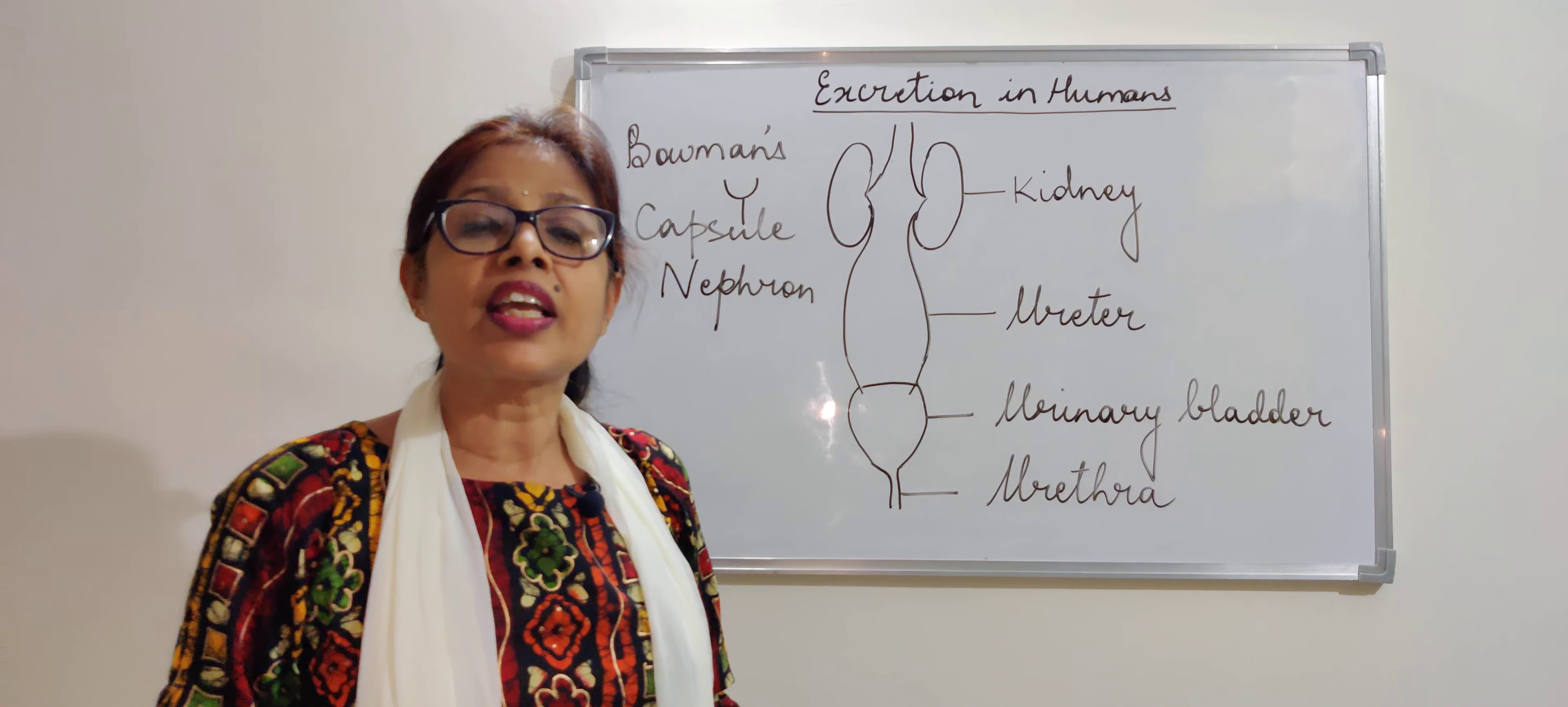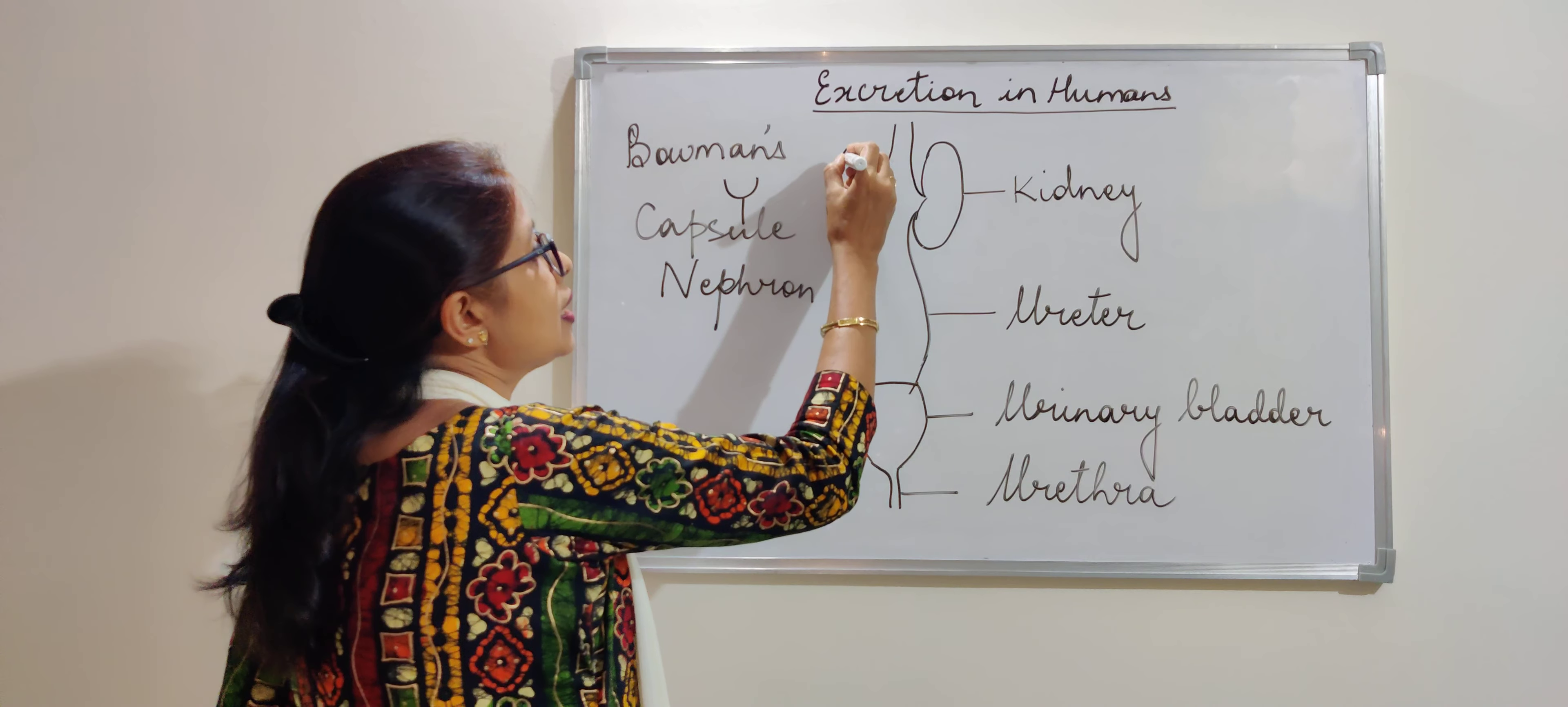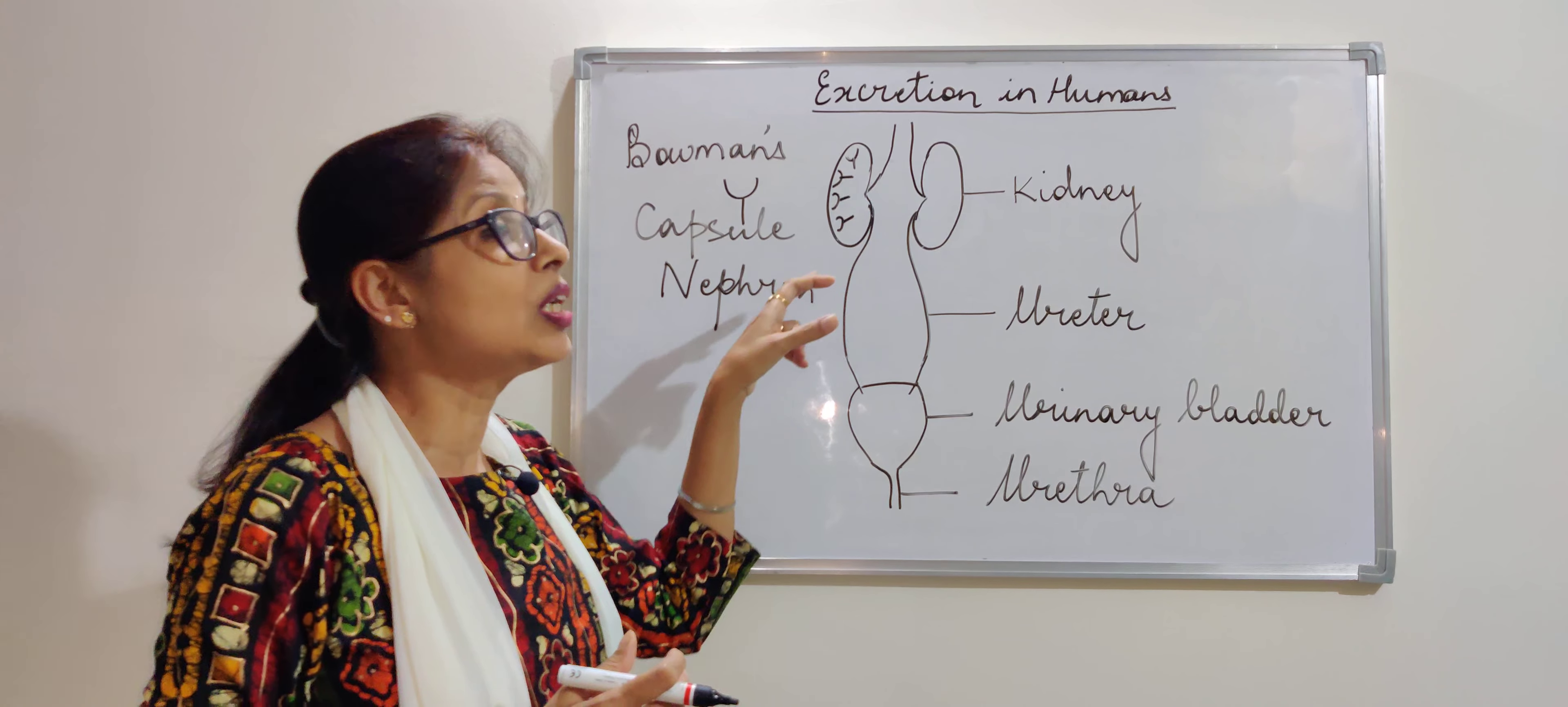So whatever waste is generated in the body, it comes from the arteries and it gets collected in the Bowman's capsule. This way, there are many such cup-shaped structures. But when we look at them, they all look as if they are in an entangled way. You cannot make out that they are so clearly visible.